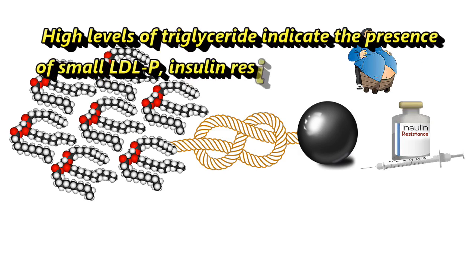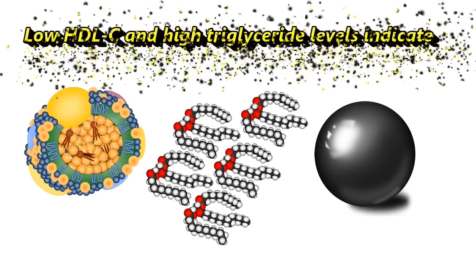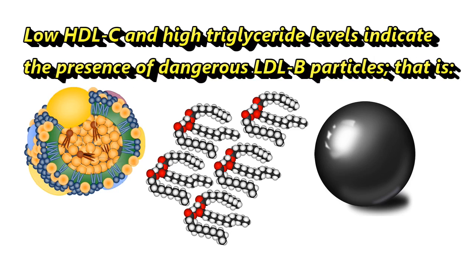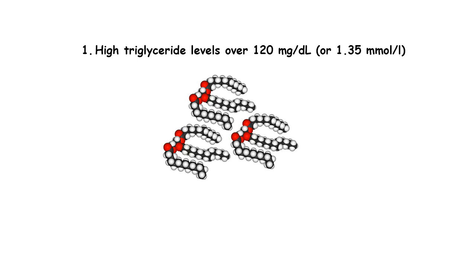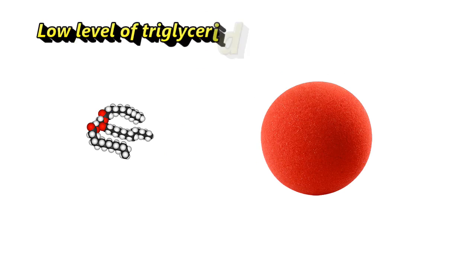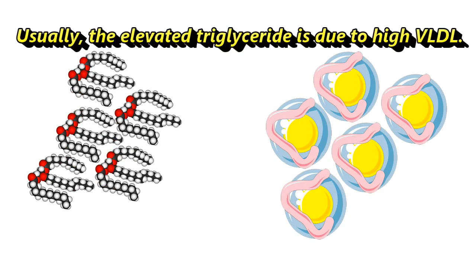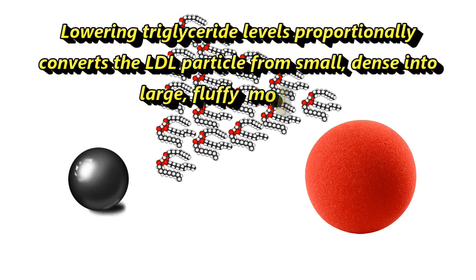High levels of triglycerides indicate the presence of small LDL particles, insulin resistance, and metabolic syndrome. Low HDL cholesterol combined with high triglycerides indicates the presence of dangerous LDL pattern B particles — specifically, triglycerides over 120 mg/dL (1.35 mmol/L) and HDL below 40 mg/dL (1.03 mmol/L) in men or below 50 mg/dL (1.29 mmol/L) in women. Low triglycerides indicate the presence of harmless LDL pattern A particles. Elevated triglycerides are usually due to high VLDL, and lowering triglycerides converts LDL particles from small and dense into large fluffy molecules.